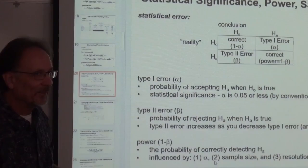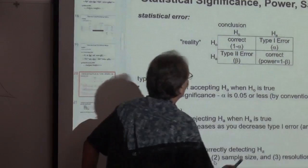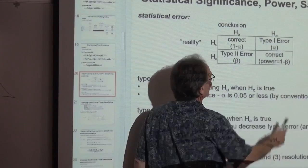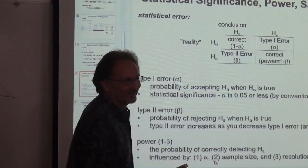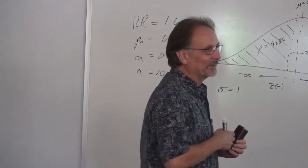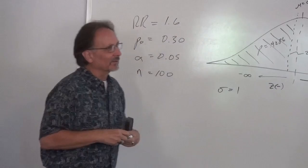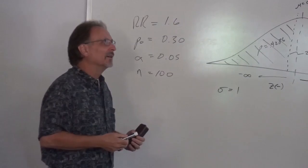The answer to the third question: we can decrease the resolution by increasing the relative risk, or we can increase the number in our sample. For the second question — what does power mean? 43% means a 43% probability of detecting an effect when an effect actually exists — of correctly concluding the alternative hypothesis when in reality the alternative hypothesis is true. Power is the likelihood that we correctly detect a true alternative hypothesis, as opposed to statistical significance, which tells us we have a low likelihood of a type one error.